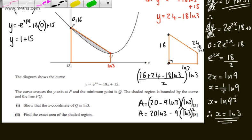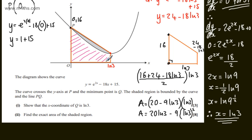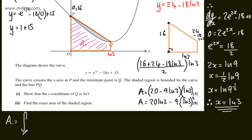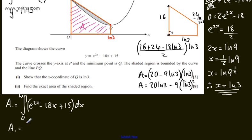Now I'll integrate the curve from 0 to the natural log of 3. Integrating between those limits gives the area trapped under the curve. I'll call this A1: the integral from 0 to ln(3) of (e to the 2x minus 18x plus 15) dx. Integrating: e to the 2x gives one half e to the 2x; minus 18x gives minus 9x squared; and 15 gives plus 15x, evaluated from 0 to ln(3).